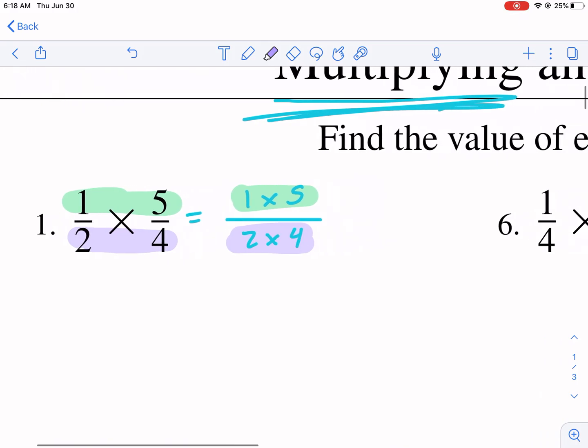That's a simple way to remember. So in the top, we simply have one times five, which is five, and then two times four, which is eight. And this is our answer.